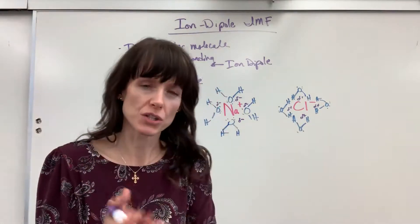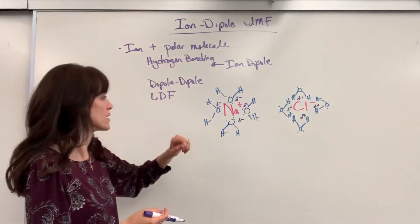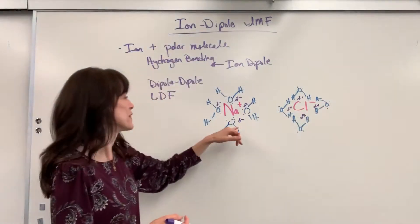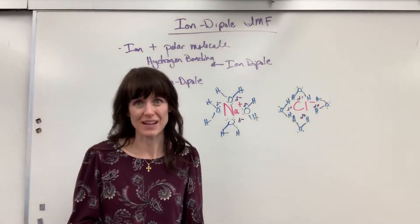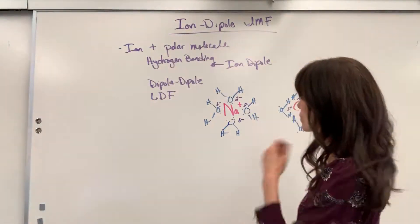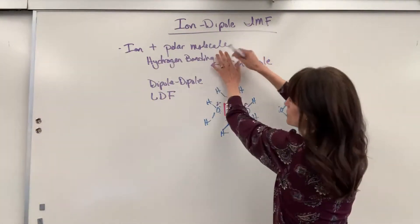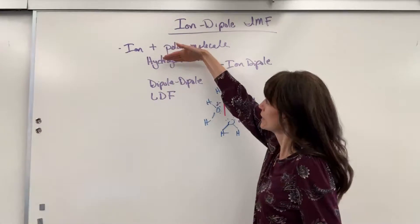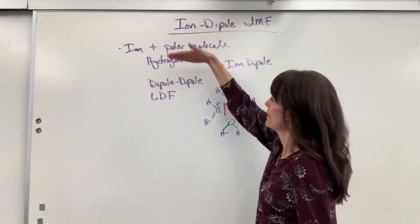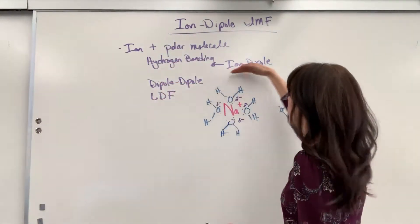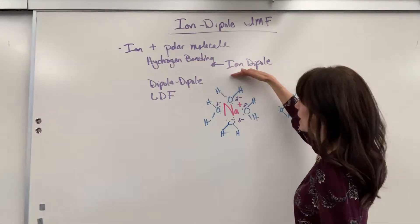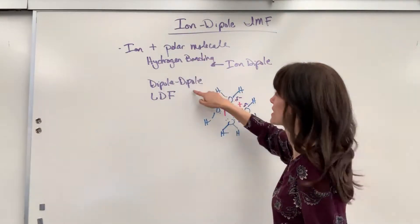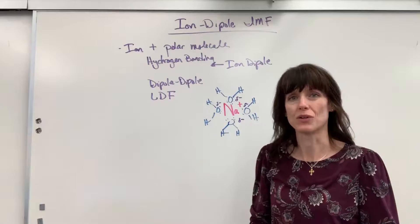So the partial positive is attracted to the negative ion, and the partial negative is attracted to the positive ion. Now, in the hierarchy of intermolecular forces — whether pure substance or a mixture — hydrogen bonding is the strongest, then dipole-dipole, then London dispersion forces. Ion-dipole fits right in this hierarchy, just underneath hydrogen bonding. It's actually stronger than dipole-dipole intermolecular forces.